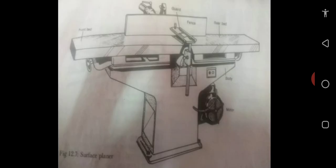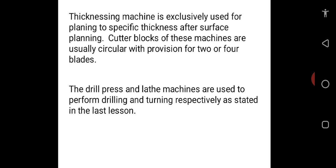The diagram of the surface planer is also shown in the figure on the notes below. The next planing machine is called the thicknessing machine, which is exclusively used for planing to specific thickness after surface planing. Cutter blocks of these machines are usually circular with provision for two or more blades. The drill press and lathe machines are used to perform drilling and turning respectively, as stated in the last lesson.